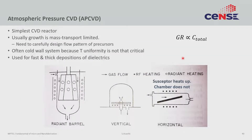Atmospheric pressure CVD (AP-CVD) reactors work at atmospheric pressure or slightly higher — at least a few hundred torr. This is the simplest CVD reactor design because it requires no extensive vacuum equipment or seals. The furnaces used for diffusion and oxidation were essentially AP-CVD reactors in design. These reactors are usually mass transport limited, partly because the high pressure increases growth rate regardless of reactor type.